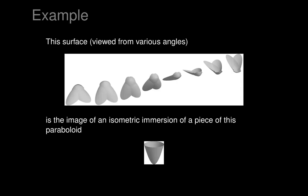Let's see a simple example. Here's a picture viewed from various different angles of what looks a bit like a bug, like some kind of a house fly. But in fact, that's actually an image of an isometric immersion, again viewed from various different angles. It's one isometric immersion of a little piece of a paraboloid.